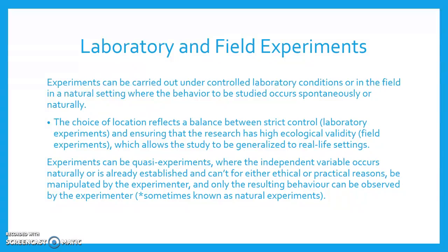Experiments can be quasi-experiments, where the independent variable occurs naturally or is already established and can't, for either ethical or practical reasons, be manipulated by the experimenter, and only the resulting behaviour can be observed. Quasi-experiments are sometimes known as natural experiments.